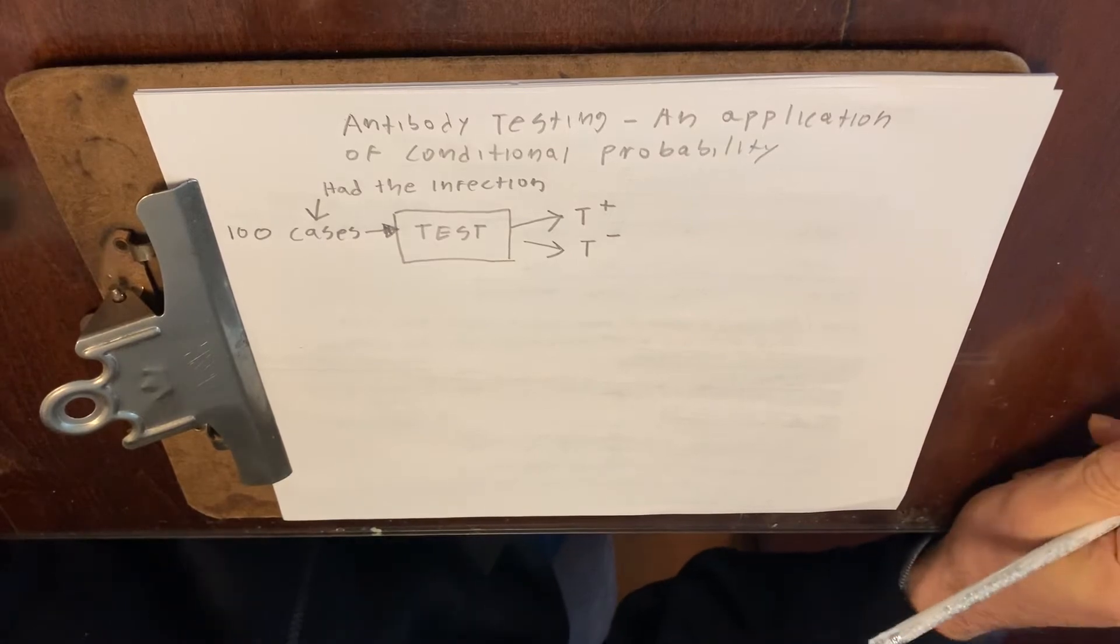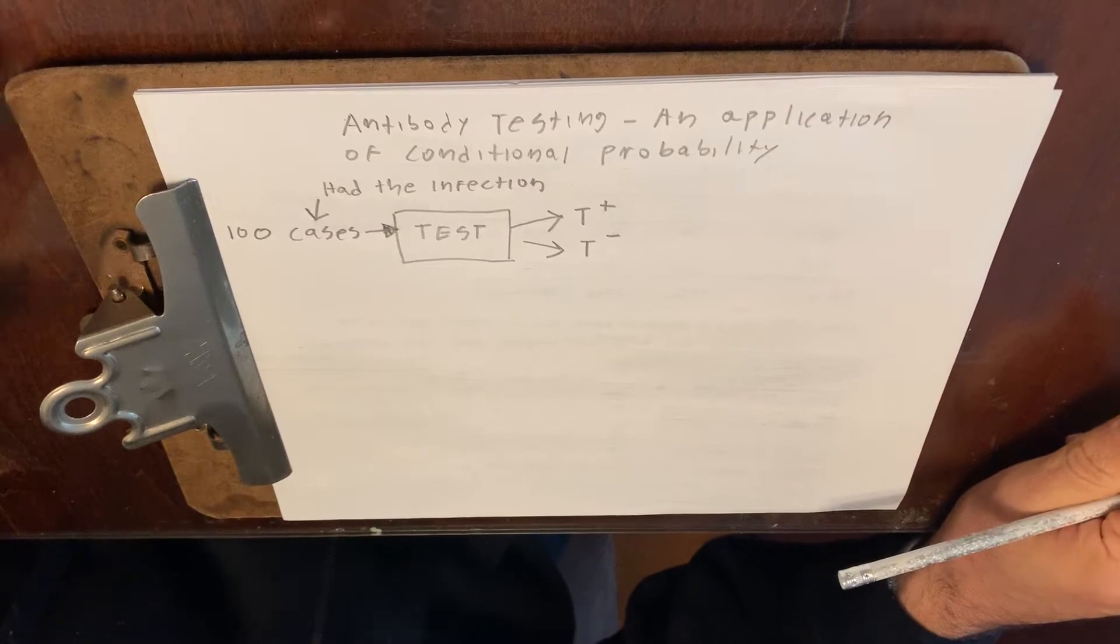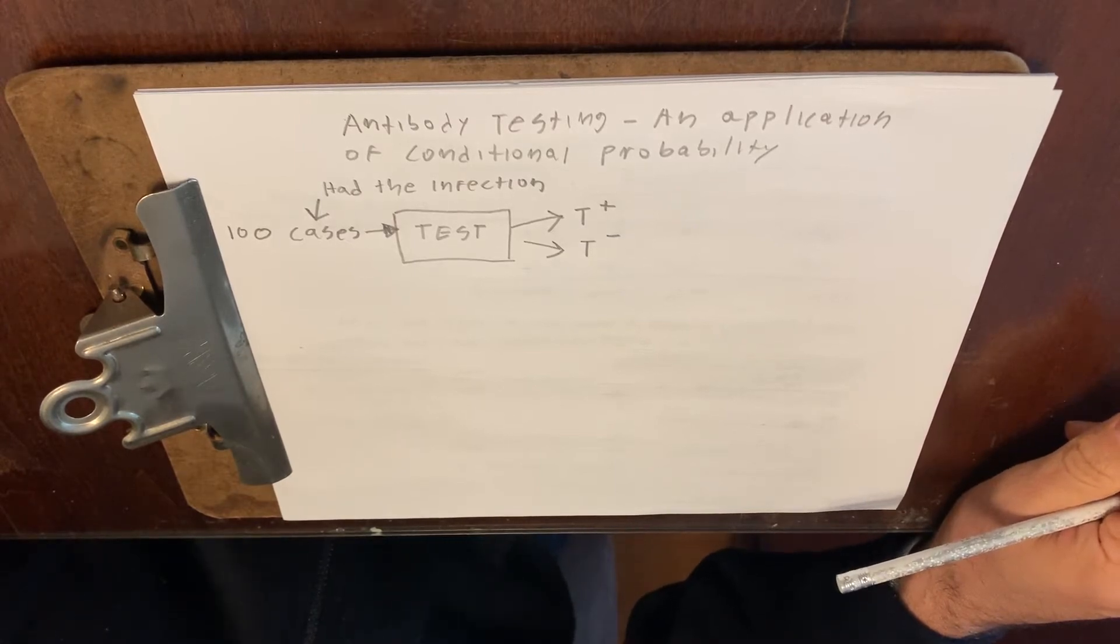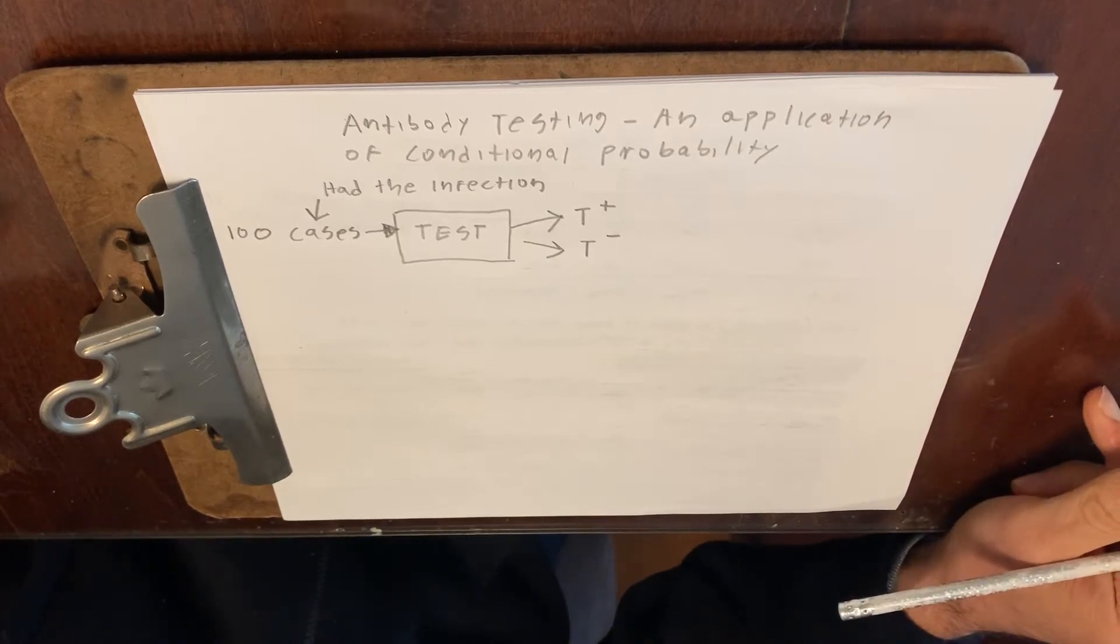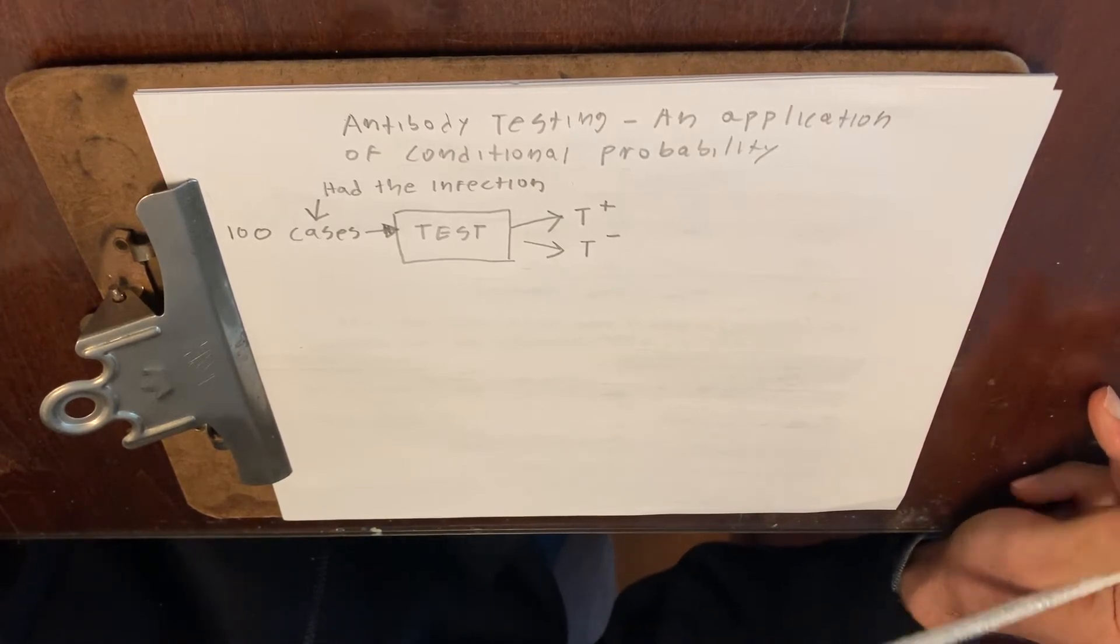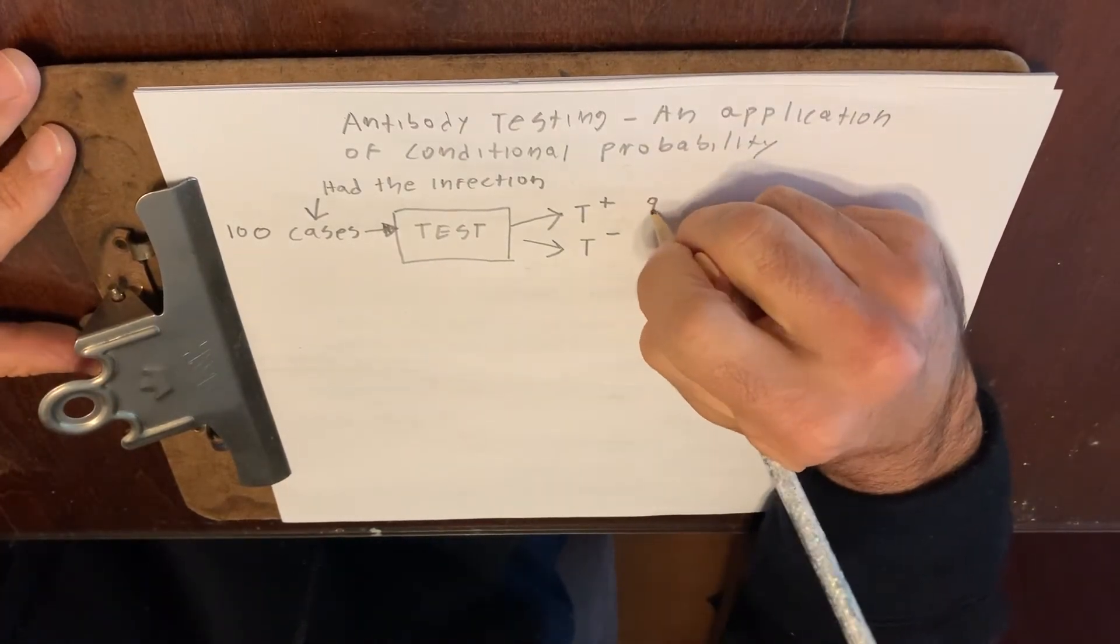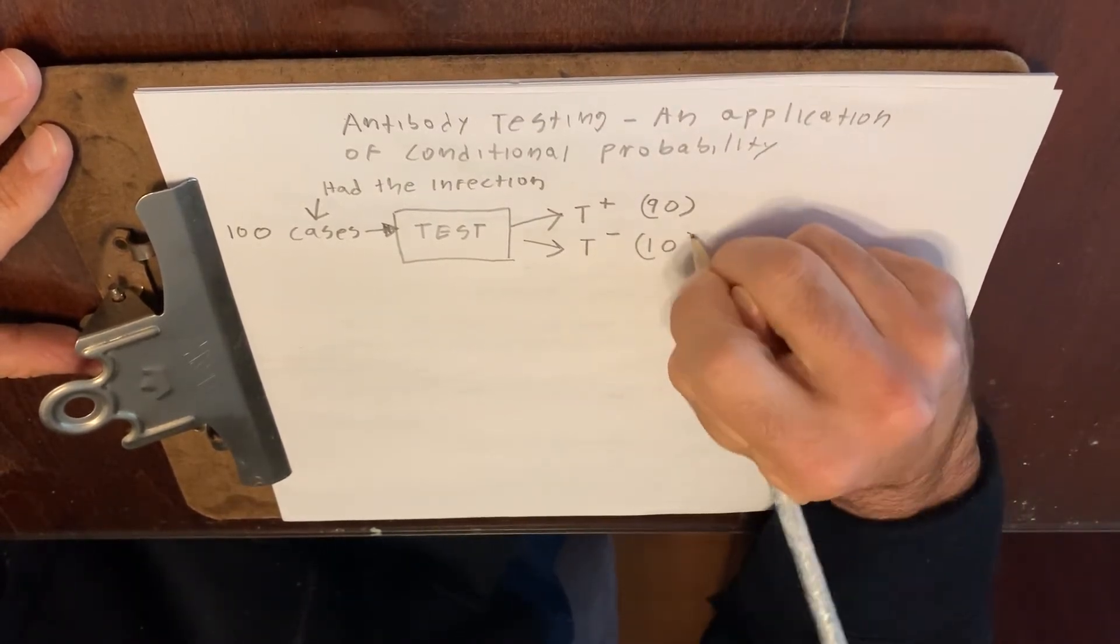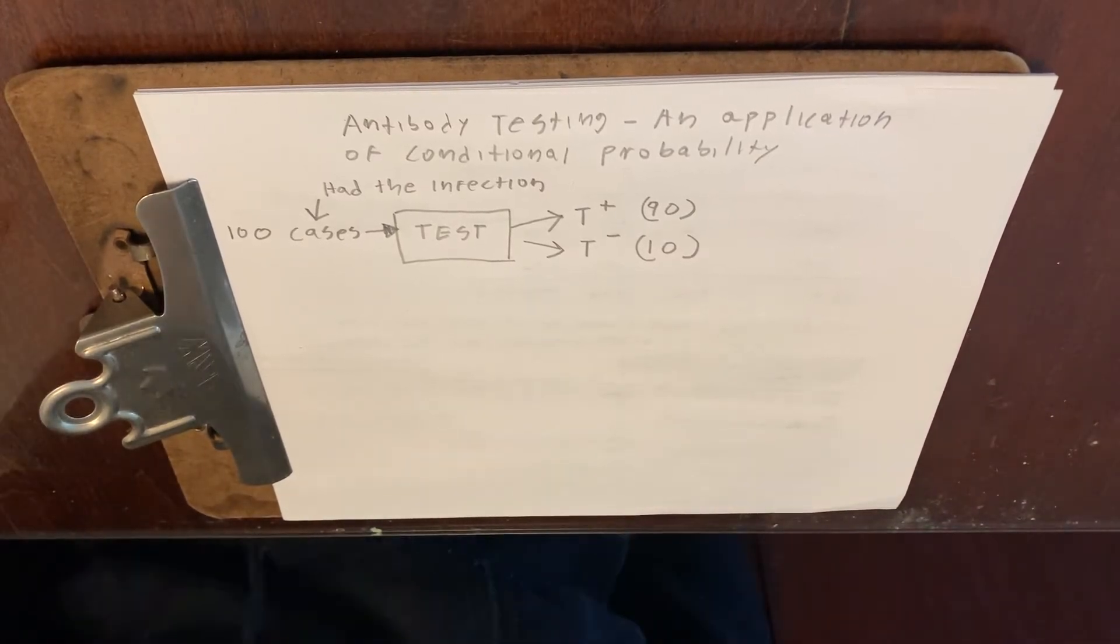Now if there was a perfect test, all hundred would test positive. But in the real world that doesn't always happen. In fact, it probably is the exception rather than the rule that all hundred cases will test positive. So let's just say, hypothetically, to make the math easy, let's say 90 cases test positive and the 10 remaining cases test negative. This could happen. I'm making the math as easy as possible.